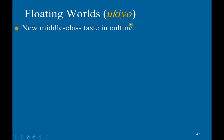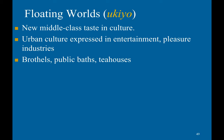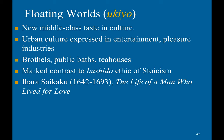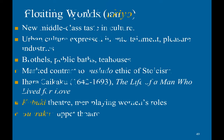There was also a notable urban class culture — the floating world, or ukiyo. Urban culture was expressed in entertainment, pleasure industries like brothels, public baths, and tea houses — a stark contrast to the Bushido ethic of Stoicism. An example is Ihara Saikaku's The Life of a Man Who Lived for Love. There was also a surge in Kabuki theater, with men playing women's roles, and bunraku, or puppet theater.